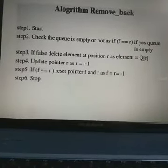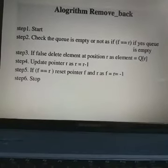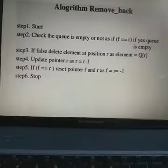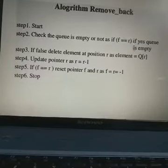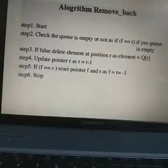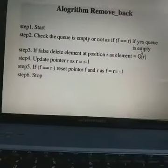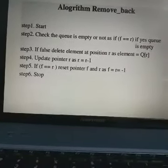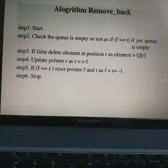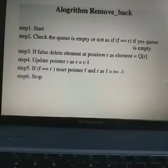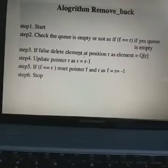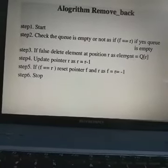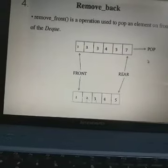Now, what is the algorithm? Start. First, we need to check if the queue is empty. If the queue is empty, then we cannot delete. How do we check? If front is equal to rear, and if that value equals minus one, then the queue is empty. If the condition is false, meaning the queue is not empty, then we proceed to delete the element at position R (rear).